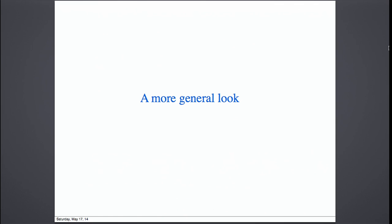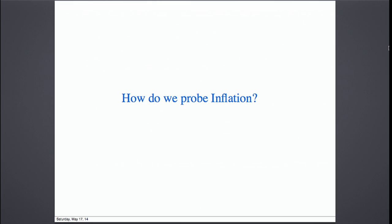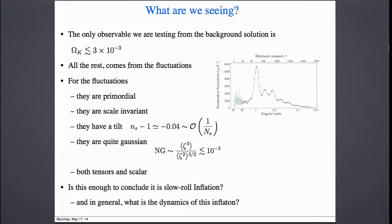Let me have a more general look at the situation. So far I concentrated on slow-roll inflation, but let me take a more general view and ask: how do we probe inflation? Basically all observables related to inflation — apart from the curvature, which is just bounded — come from the fluctuations. The fluctuations, we know, are primordial because of the peaks, scaling-invariant with a small tilt. They are nearly Gaussian. They contain both tensor and scalar modes. But is this enough to conclude that it is slow-roll inflation?